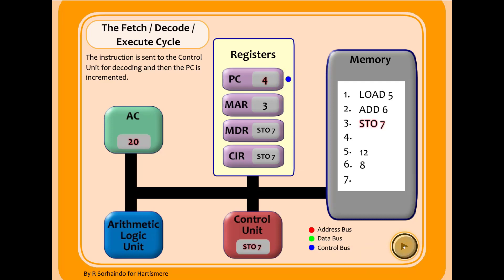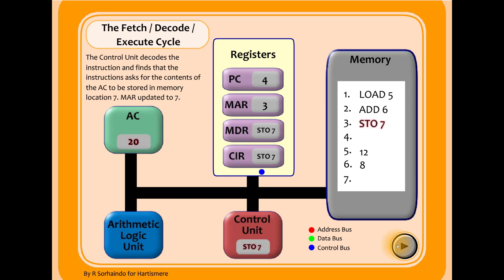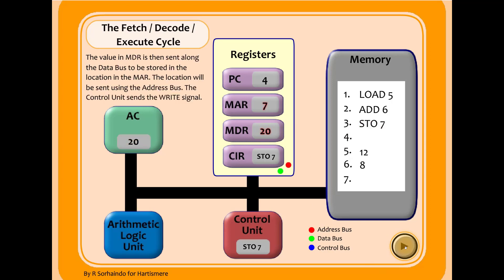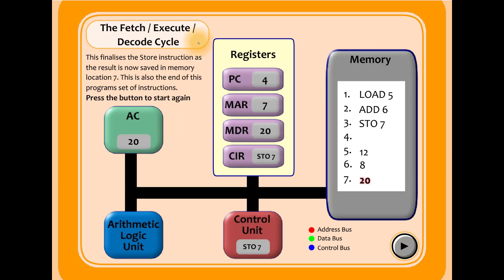To execute the store instruction, the control bus updates the memory address register to seven. The accumulator value is taken along the data bus and placed into the memory data register. From there, address seven goes along the address bus, the value twenty goes along the data bus, and the control bus carries the instruction to store that value from the MDR into address seven. This completes the execute cycle. Instruction number four is empty, so there are no further instructions — you have now seen three complete fetch-decode-execute cycles.